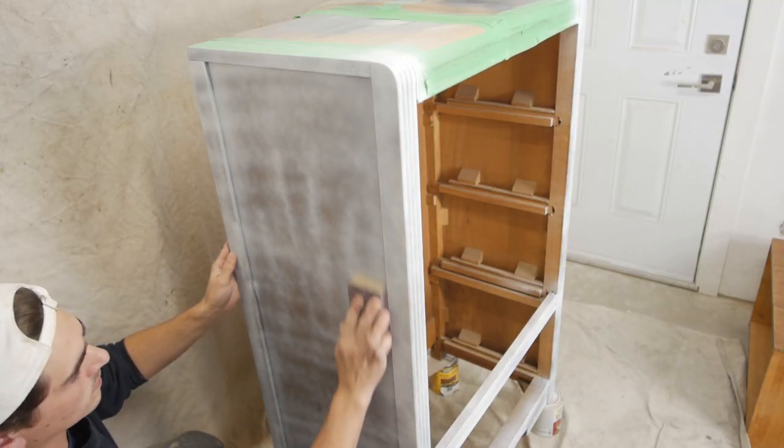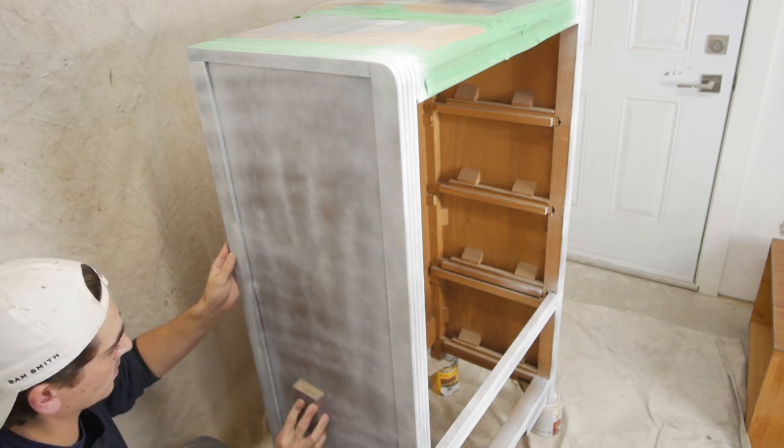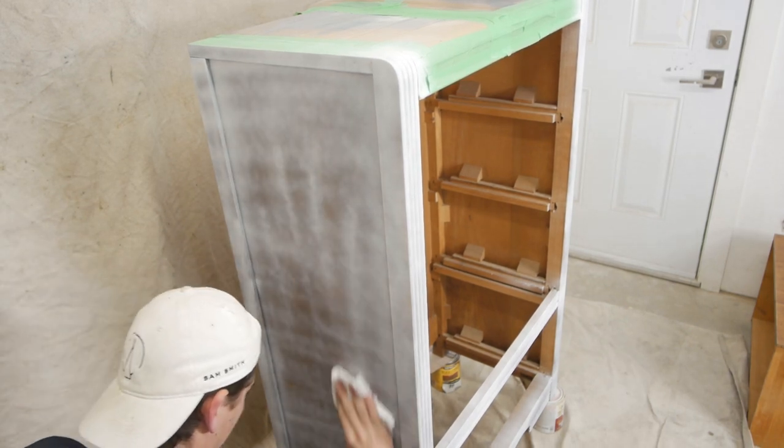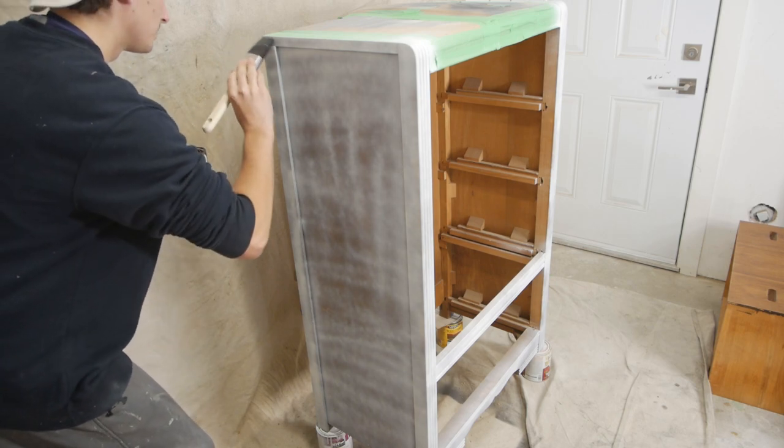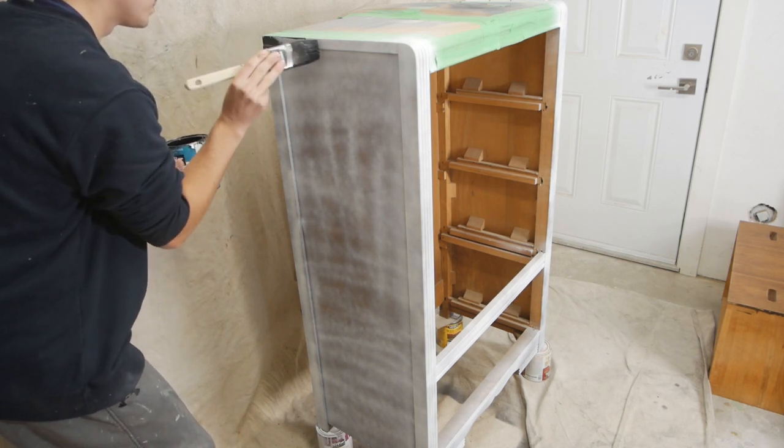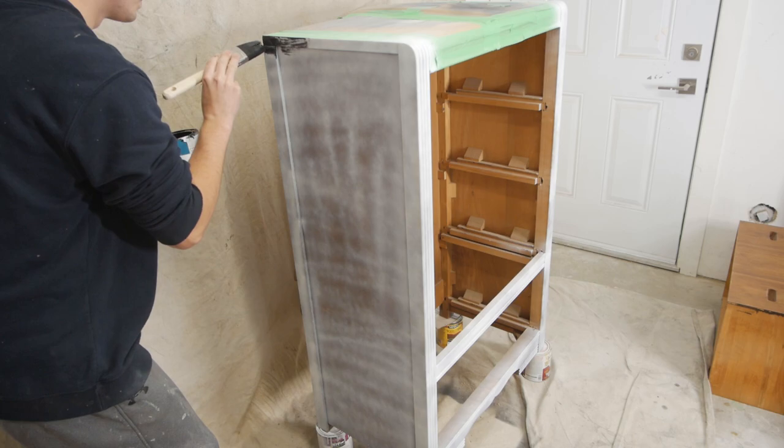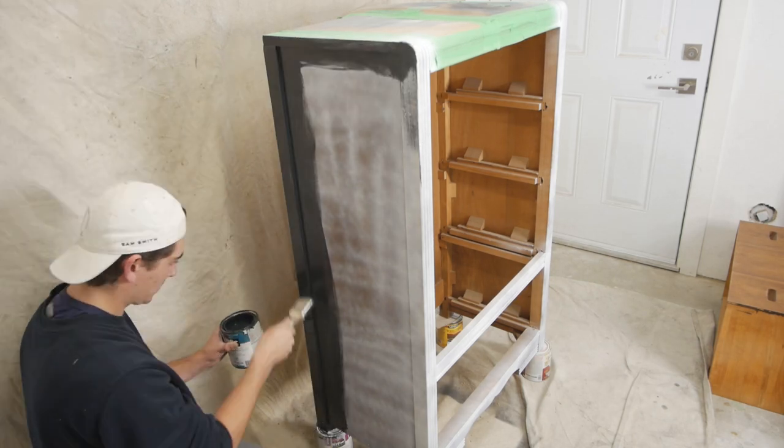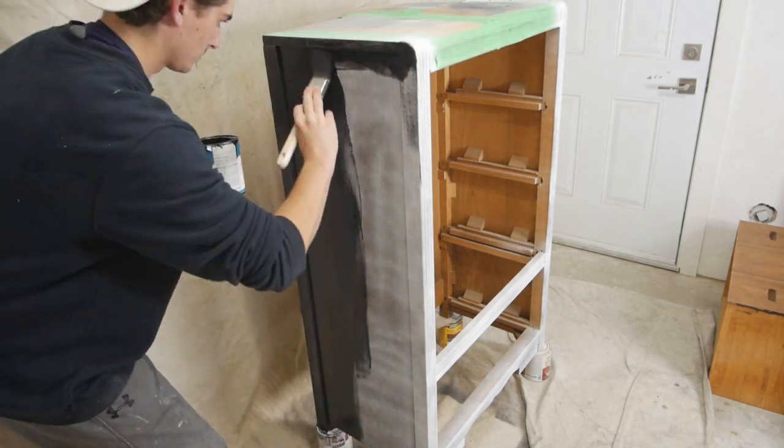I grabbed my 220 grit sanding sponge just to give it a quick sand before starting to paint it black. I'm using a paint brush to apply this paint. Make sure the brush is decent quality - you don't want pieces of the brush falling off into your paint. That can get pretty annoying.